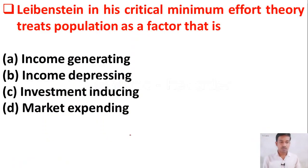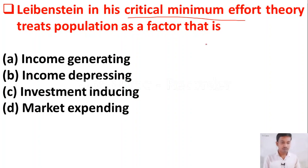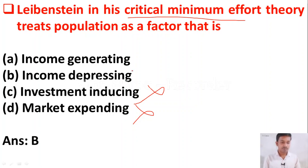The next question: Leibenstein in his critical minimum effort theory treats population as a factor that is — option A: income generating, option B: income depressing, option C: investment inducing, option D: market expanding. Option B, income depressing, is the right answer.